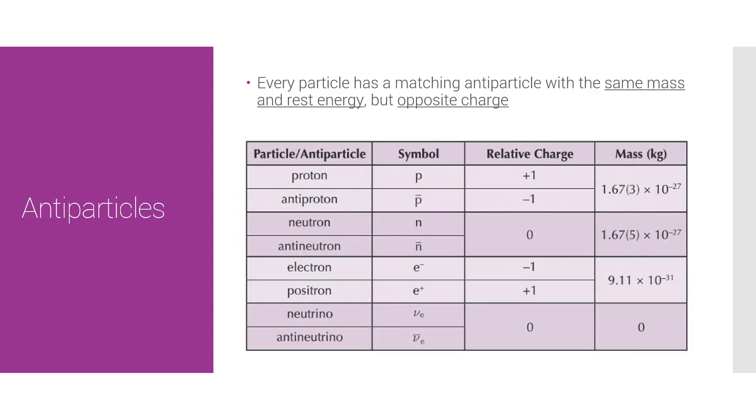The antiparticles. Every particle has a matching antiparticle with the same mass and rest energy, but opposite charge. Here's a nice little table. So, each antiparticle is basically called anti-whatever and has a line above the symbol to signify the antiproton.